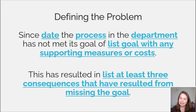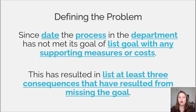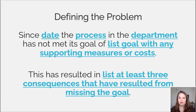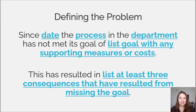Ideally, as you define those goals, you're going to have measures in there. This has resulted in — and then you're going to list out all of those different things that it's resulted in. This is the easiest way to start putting together your problem statement and keeping it really, really simple.